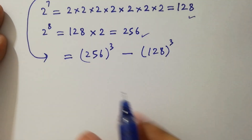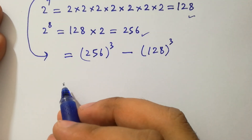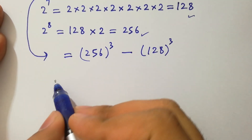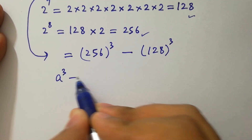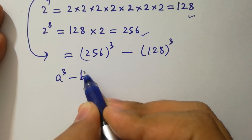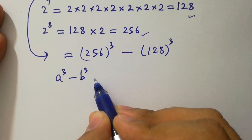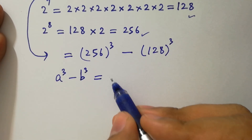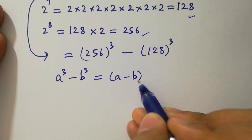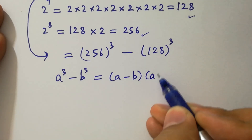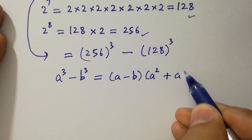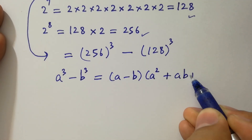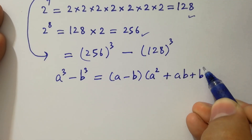In the next step, apply the formula of a cubed minus b cubed, which equals a minus b, times a squared plus ab plus b squared.